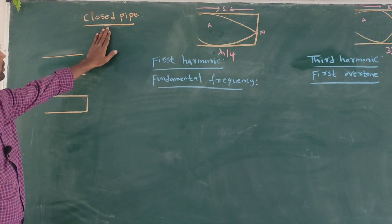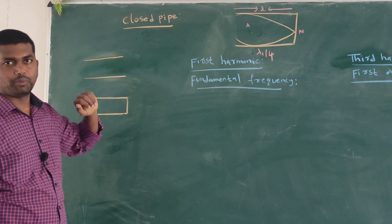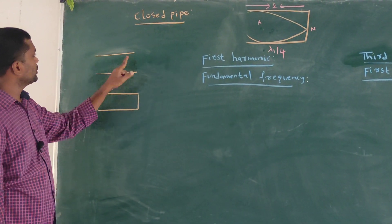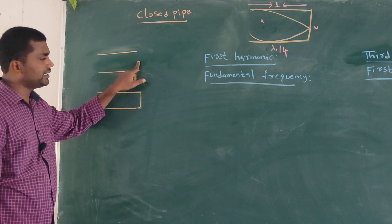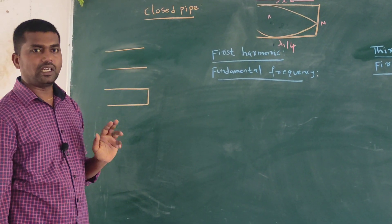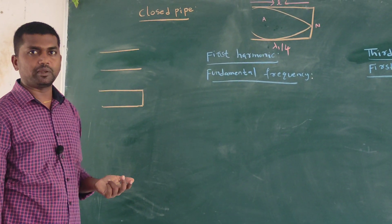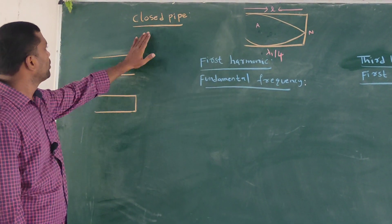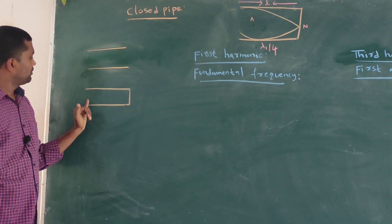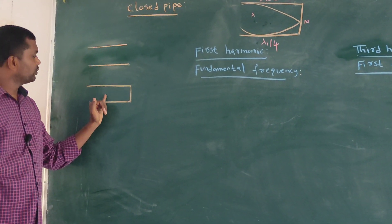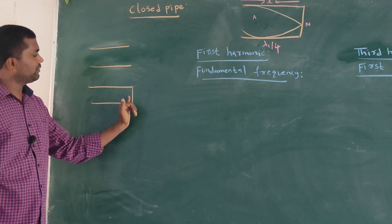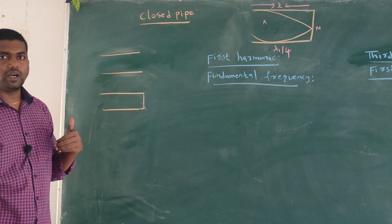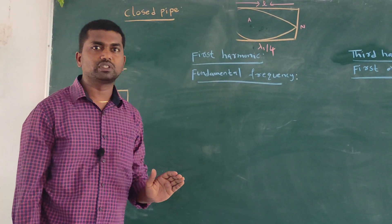The next topic is closed pipe. Already known is the open pipe — if both the first and second ends of a pipe are open, it is called an open pipe. The frequencies of an open pipe are in the ratio 1:2:3. The second one is the closed pipe: if one end is open and another end is closed, it is called a closed pipe.